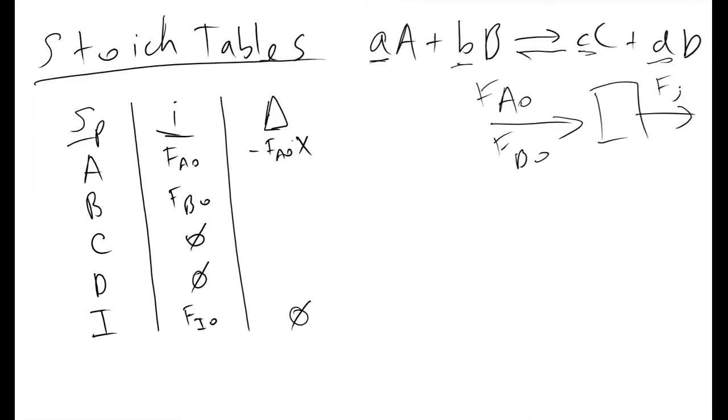In the case of B, our change would be minus b over a times FA0 x. For reactant C, we'll have lowercase c, the stoichiometric coefficient for species C divided by the stoic coefficient for species A times FA0 times x. And then we'll also have the same for our product D.